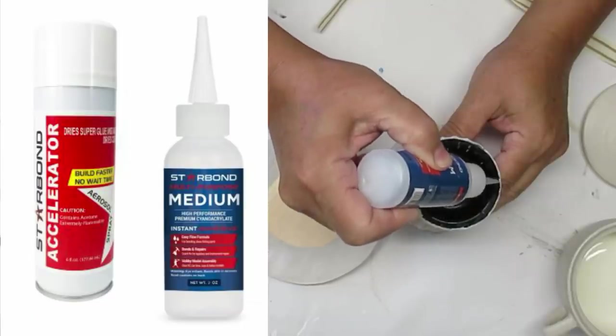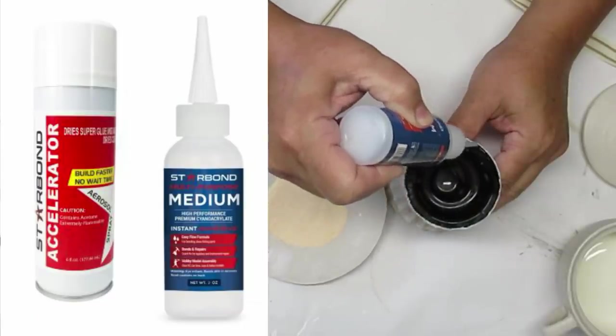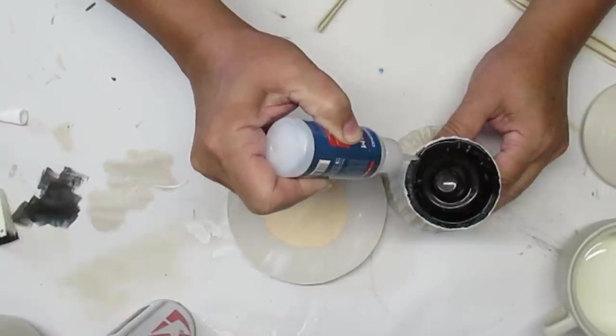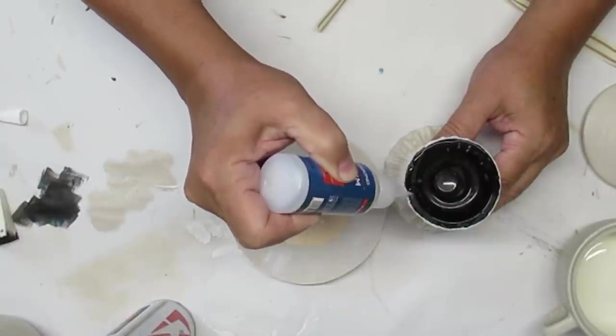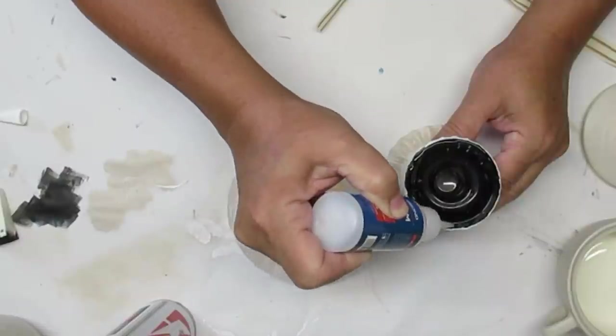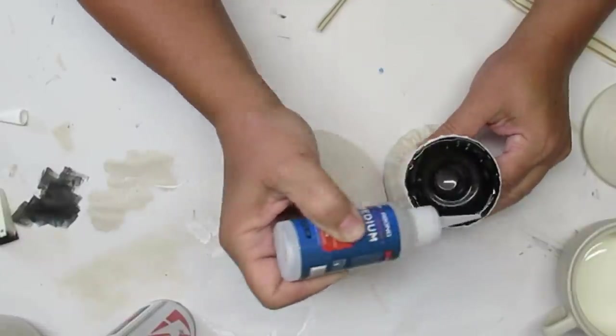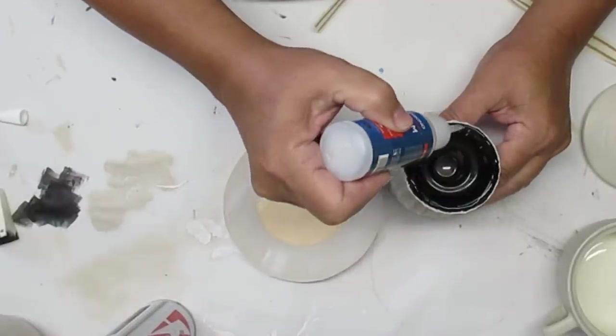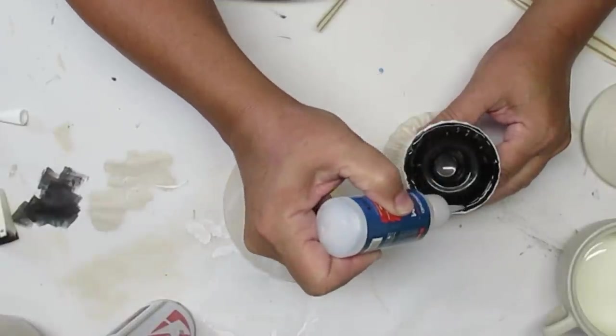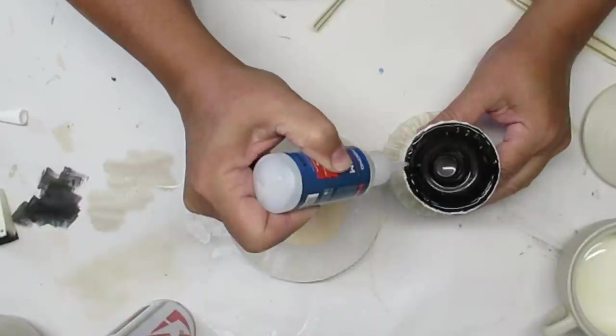I'm using my Starbond glues, the medium consistency super glue and the accelerator to glue these two pieces together. I like using the medium because it's a little thicker and it gives you a little bit more working time. I'm going to give it a really good amount all the way around and make sure that every little nook and cranny of the top of this candlestick is completely covered with glue.